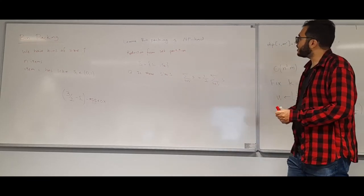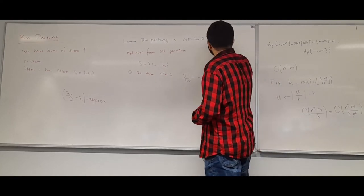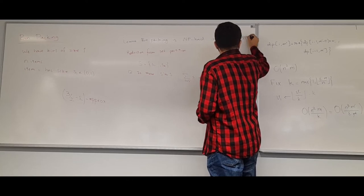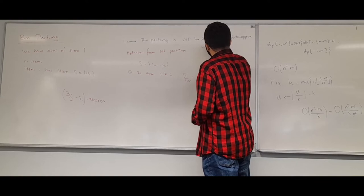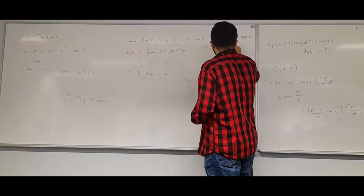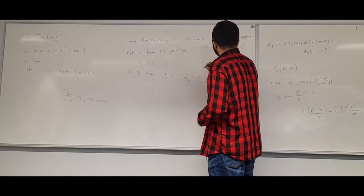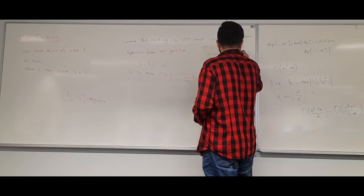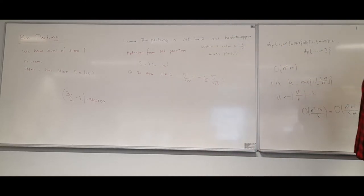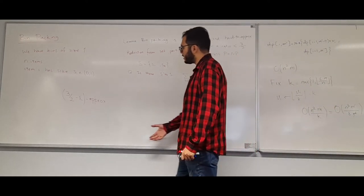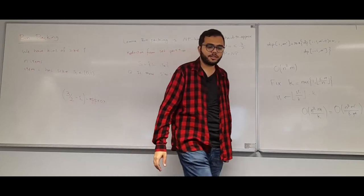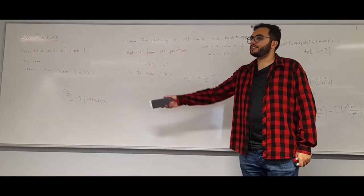So bin packing is NP-hard and hard to approximate with ratio less than 3/2, unless P = NP. Let's actually try to get an approximation algorithm with a constant ratio, and hopefully exactly 3/2.